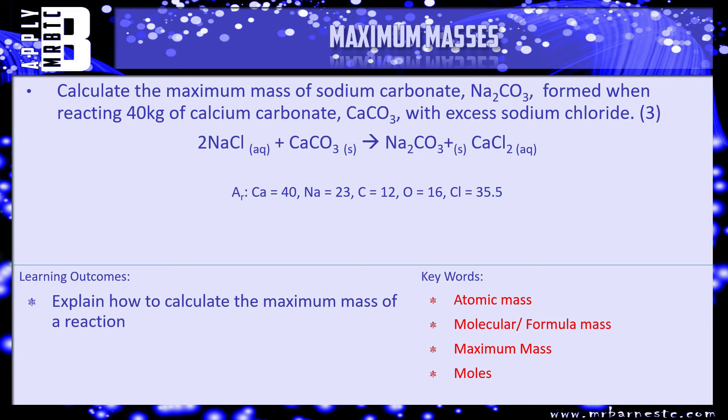Okay, time for you guys to have a go. So I've got a question for you. It says calculate the maximum mass of sodium carbonate, Na2CO3, formed when 40 kilograms of calcium carbonate reacts with excess sodium chloride. So the two chemicals you want to work with are Na2CO3 and CaCO3. So step one, work out the formula mass for both. You should be able to do that. That's an easy one mark out of three.